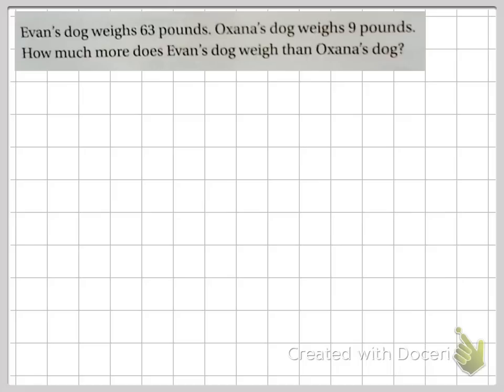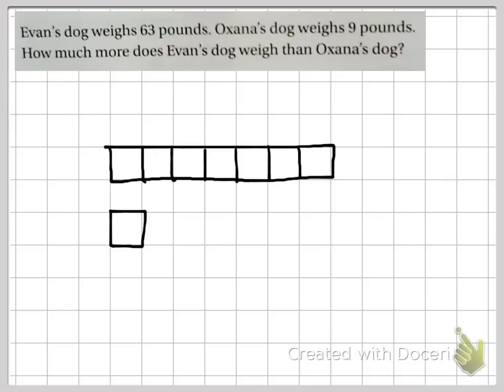Well, that's pretty easy. Let's set up the model again very quickly. Here's Ohana's dog. One, two, three, four, five, six, seven. There is Evan's dog, and we know now that Ohana's dog is nine pounds, and Evan's dog is 63.